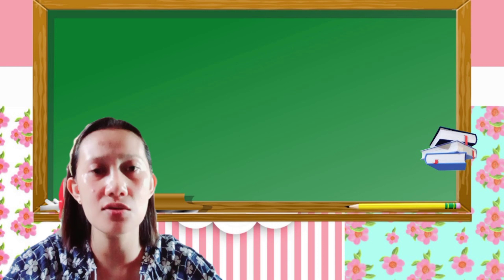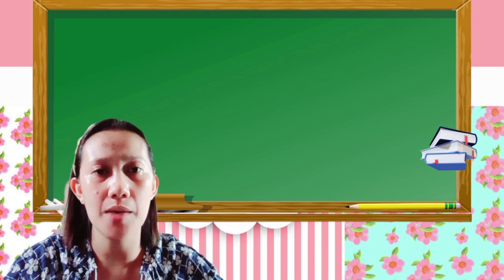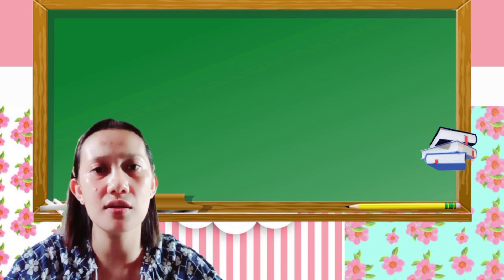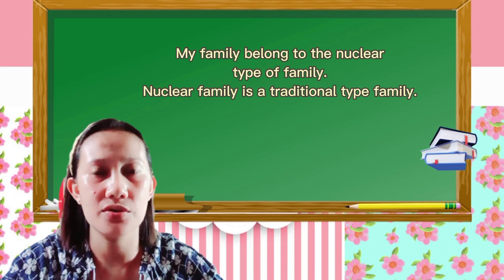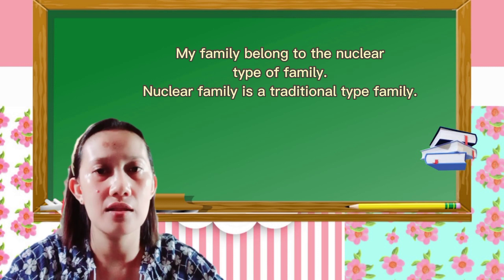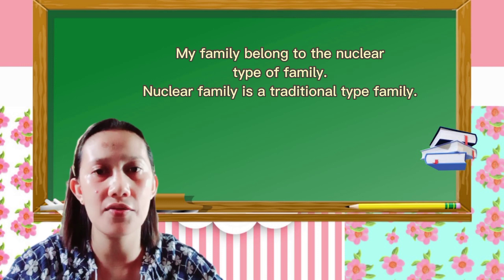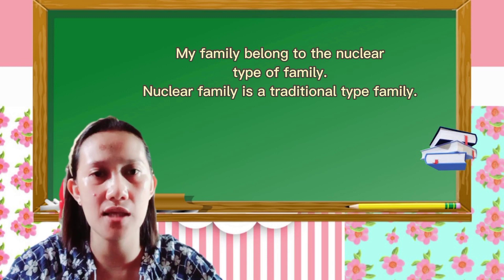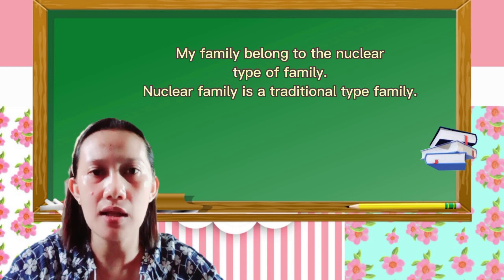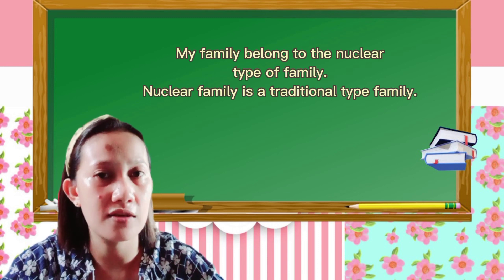I define my family as a nuclear family — it is the traditional type of family. A nuclear family is a family unit that includes two married parents of opposite genders and their biological or adopted children living in the same residence. However, the term nuclear family can mean several things in today's society, and the definition of this family structure is evolving.